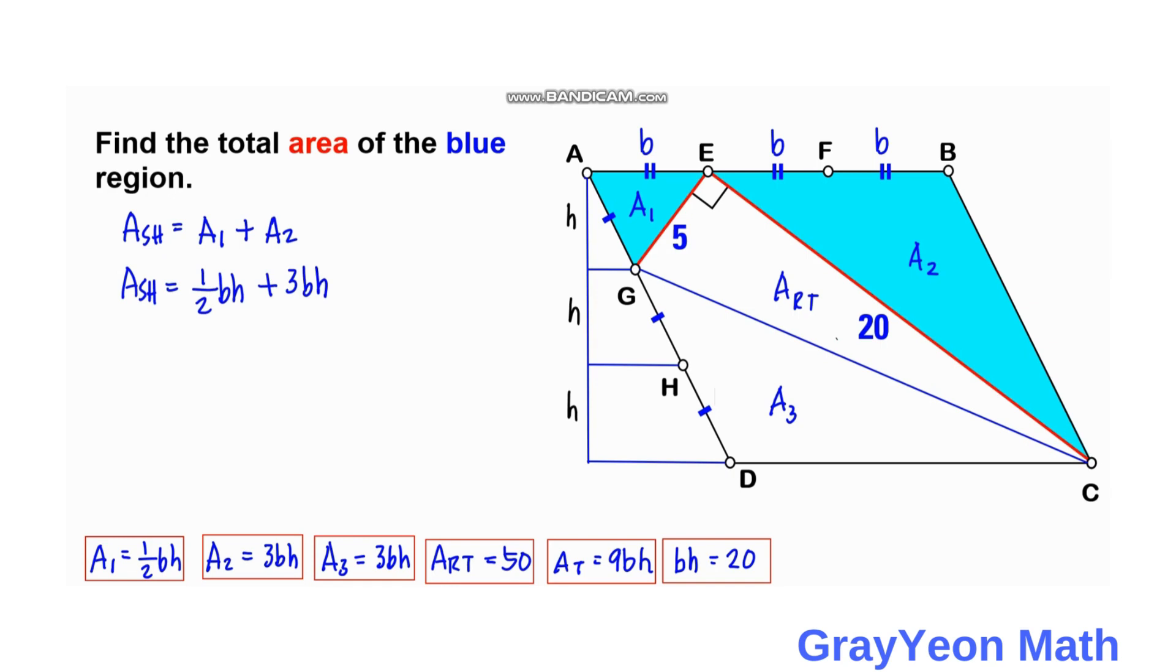And we simply replace the bh with value of 20. So bh is 20 as we got earlier. Plus 3 times 20.